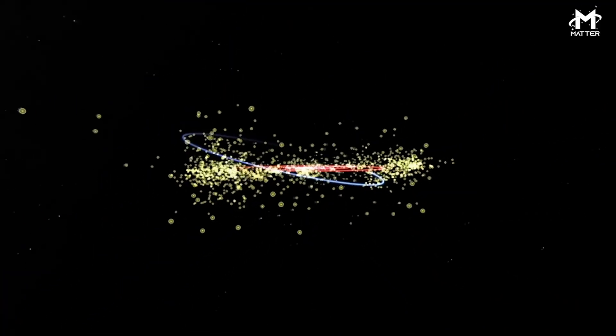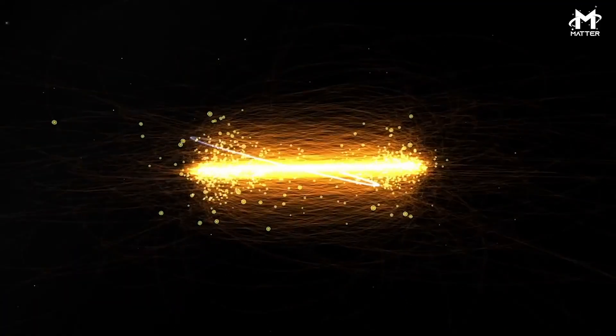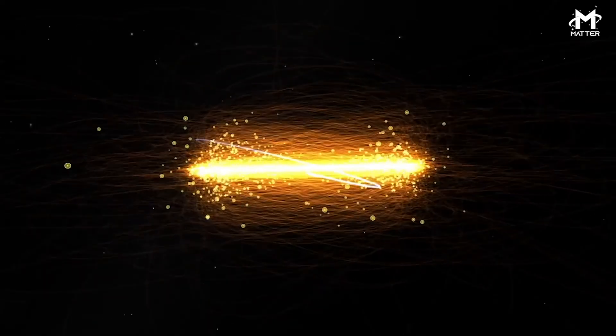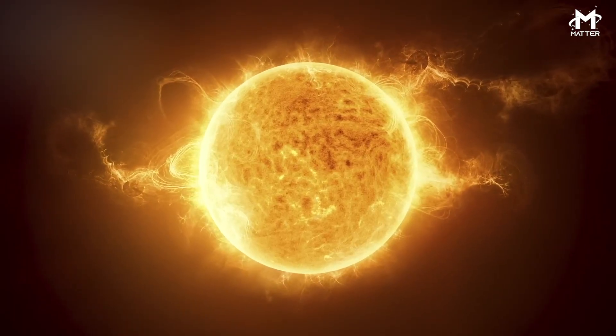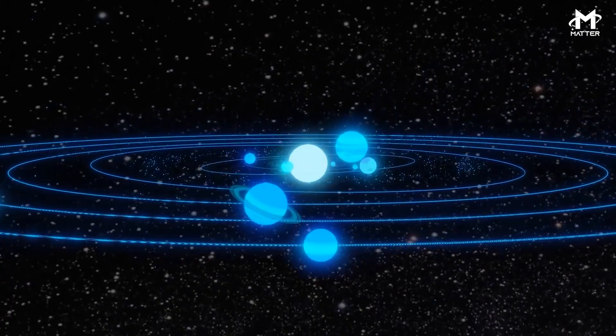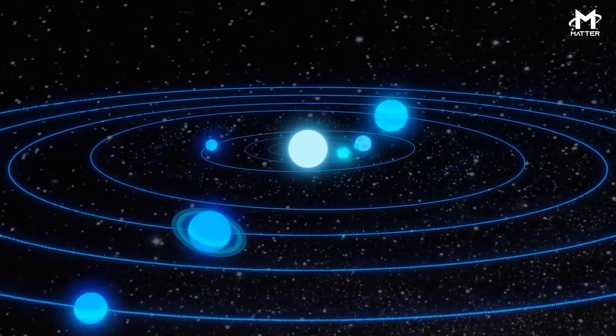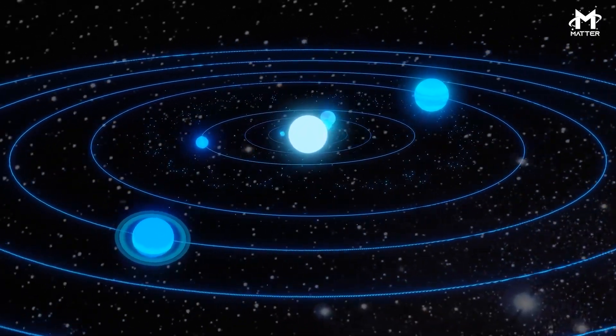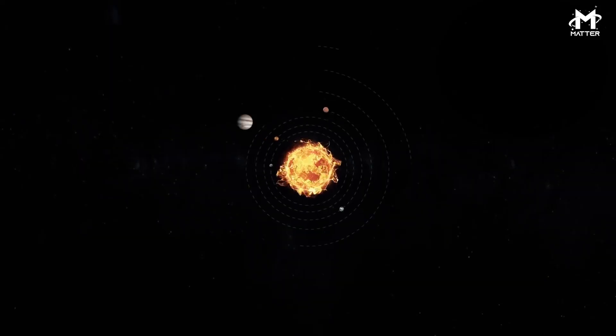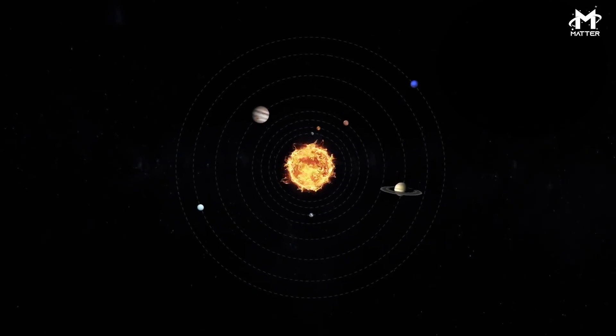But did you know that if we were to take all of the mass contained within our solar system, over 99 percent of that mass would come from the Sun? That means all planets, asteroids and space debris floating in our solar system make up less than a single percent of our local star system.